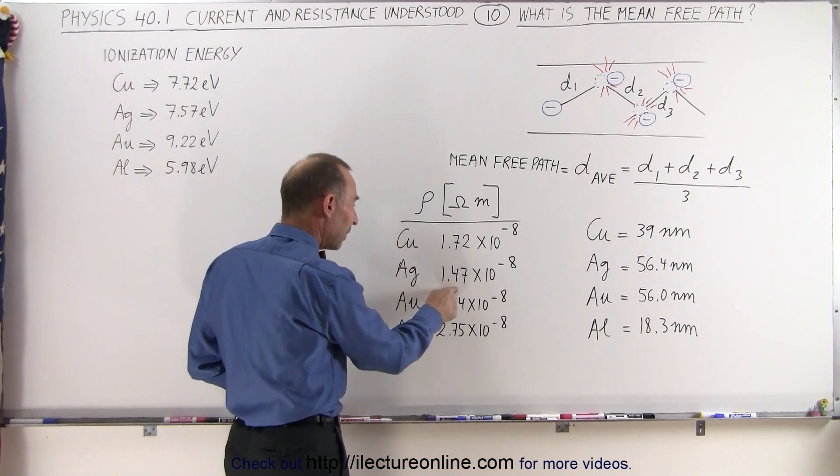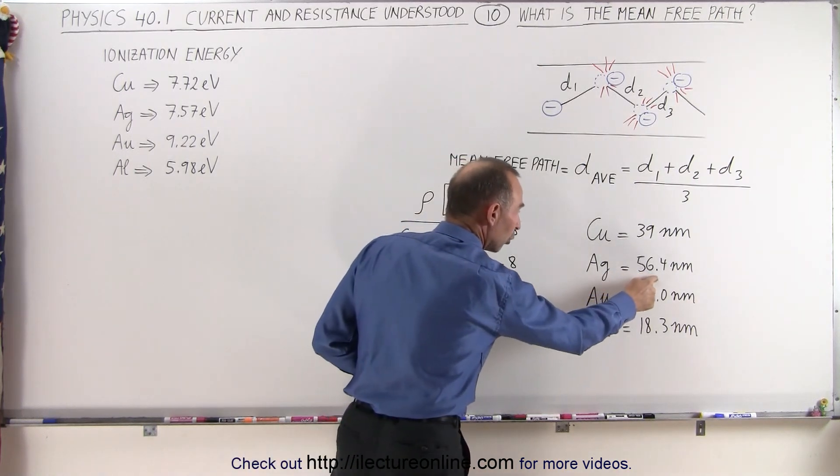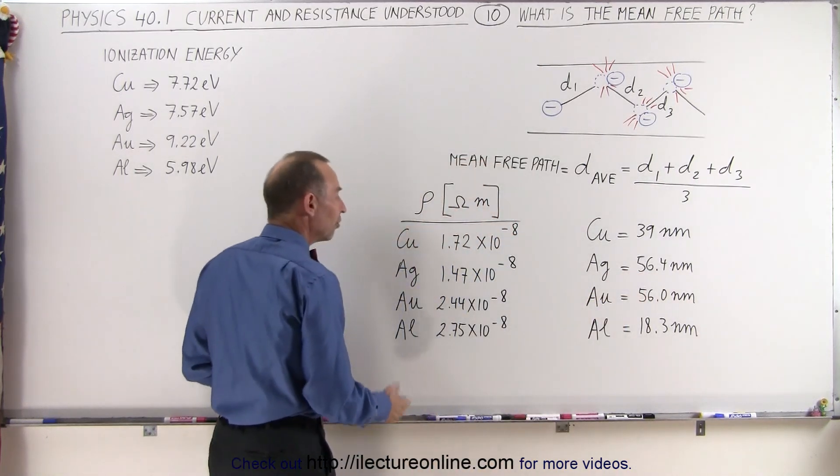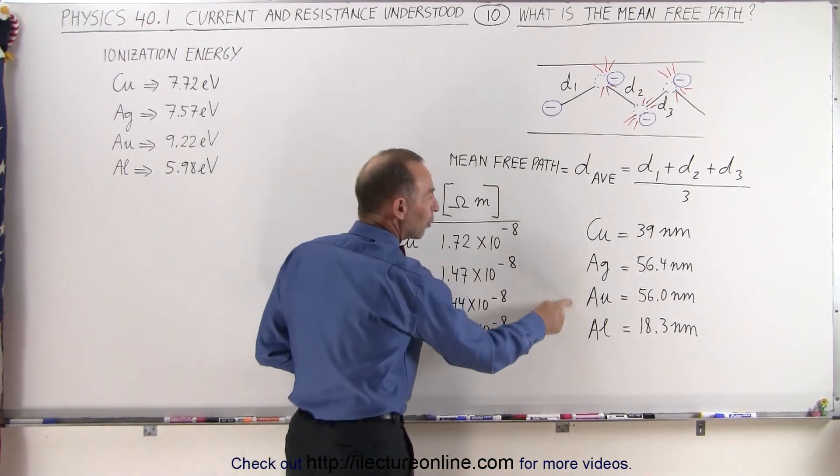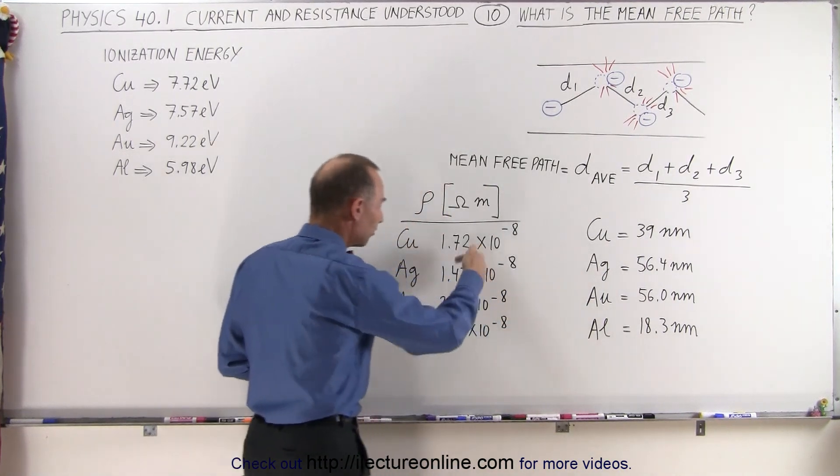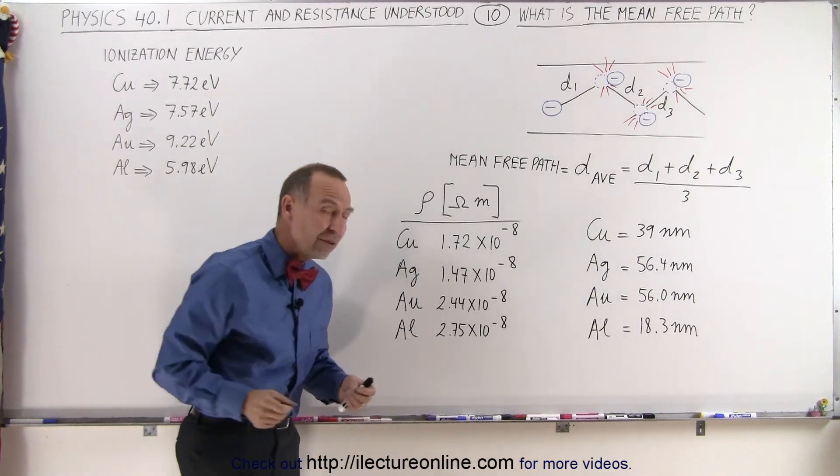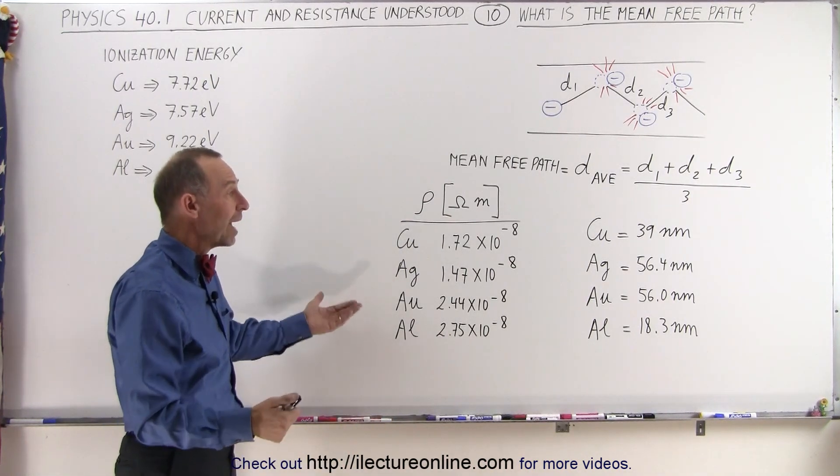Let's see here, silver is the best, silver has the longest or largest average distance, but you would say since silver and gold are so close together, you would expect the resistivity to be much closer together between silver and gold, and it's not.